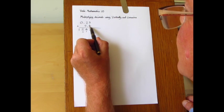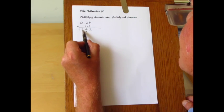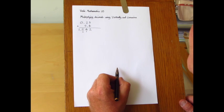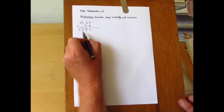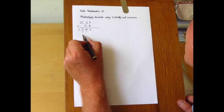So you can just count 1, 2, 3, and 1, 2, 3, and so the decimal point goes there.